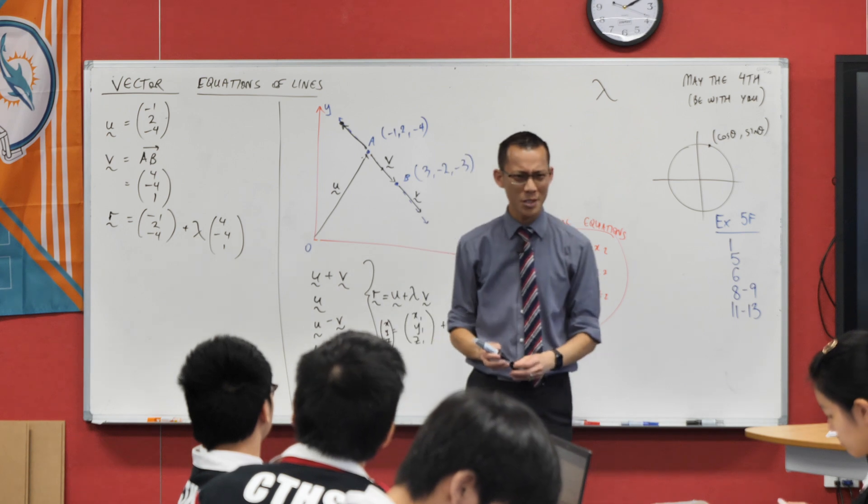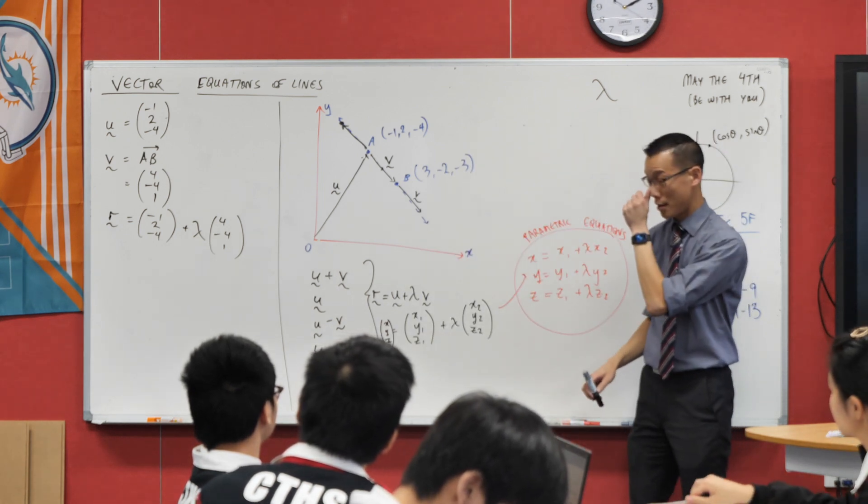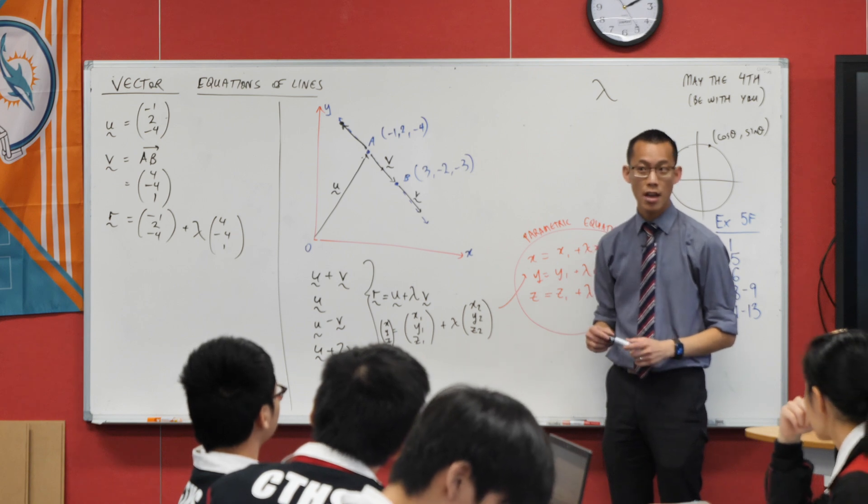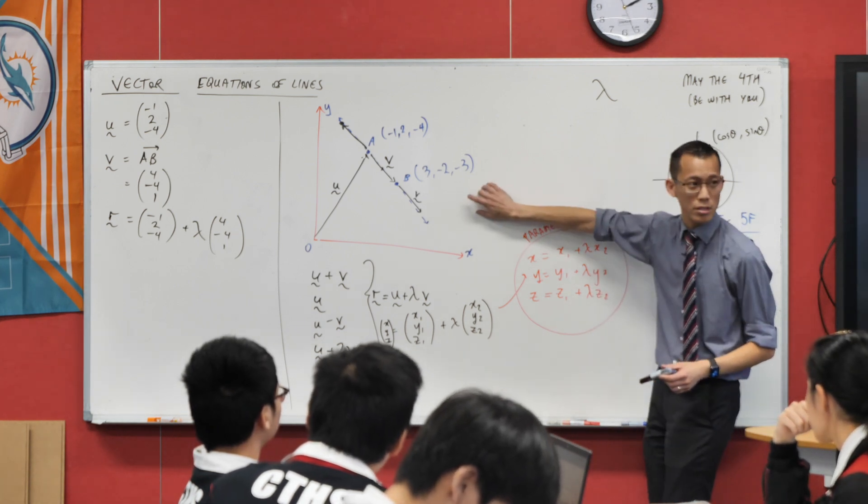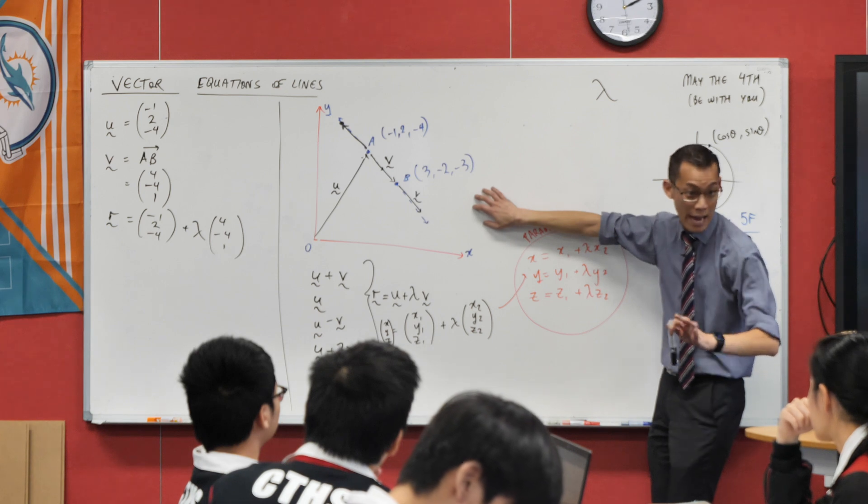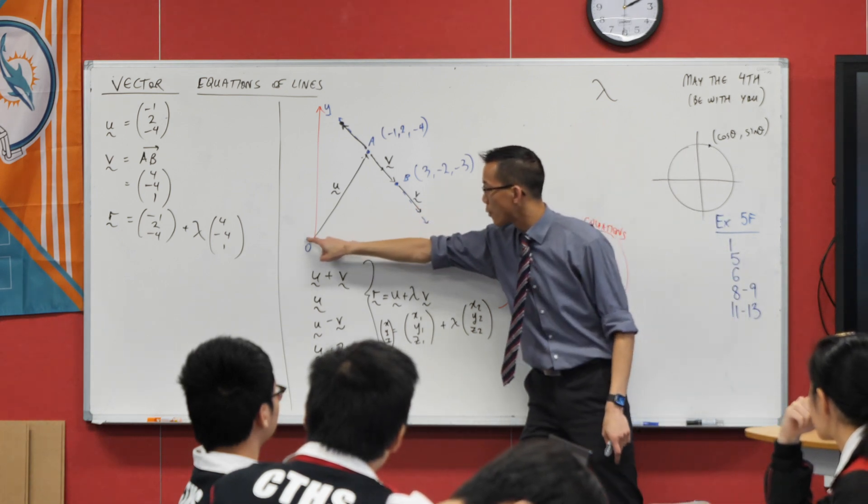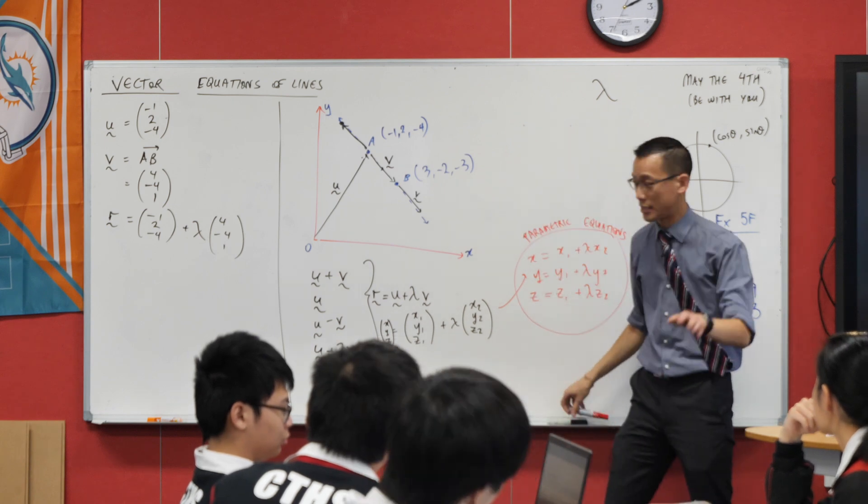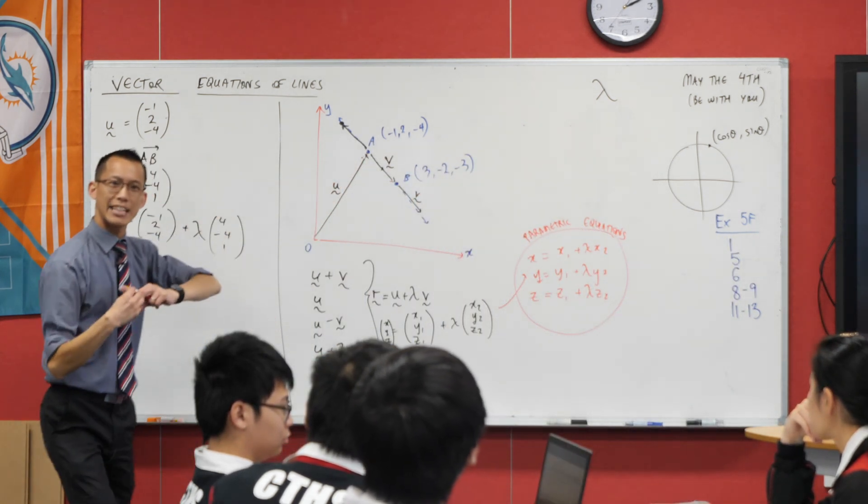Now as promised I want to show you another way to do this because this is not the only way to state the vector equation. There were some assumptions built into this that don't have to be used. I said go from O to A, and by the way this has a special name so we should label it together.